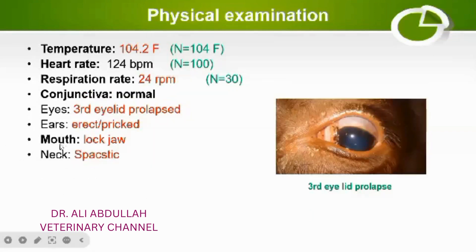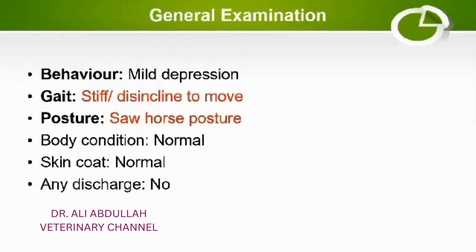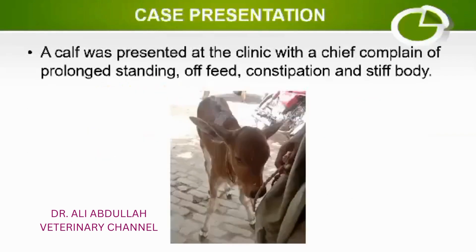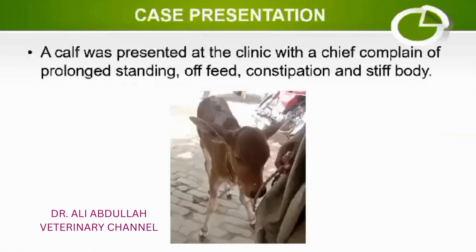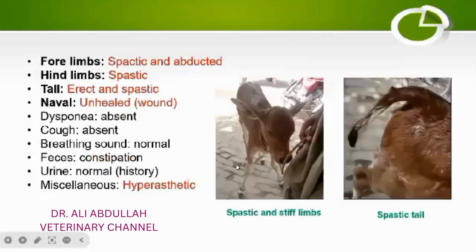As far as the mouth is concerned, the mouth was locked in position due to paralysis. Because of this lockjaw, the animal was not able to eat or drink anything, which is why the animal was suffering from anorexia. The neck was also spastic and extended, as you can see in this picture.